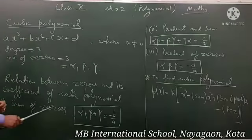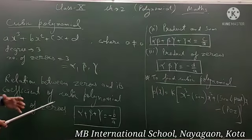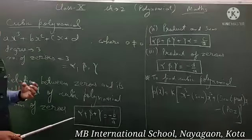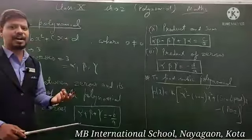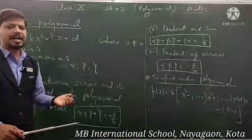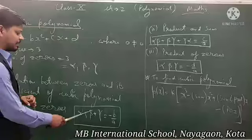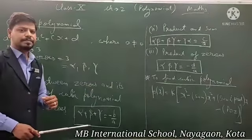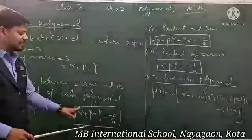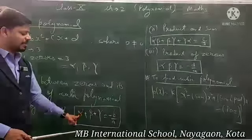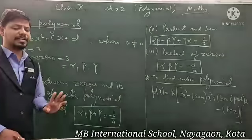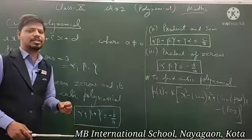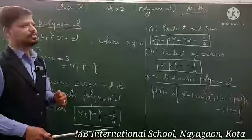First relation is sum of zeros. Zeros ka sum kiske equal hota hai? Sum of zeros, that is alpha + beta + gamma, is equal to -b/a. Yeh pehla relation hai, isko bolte hain sum of zeros.